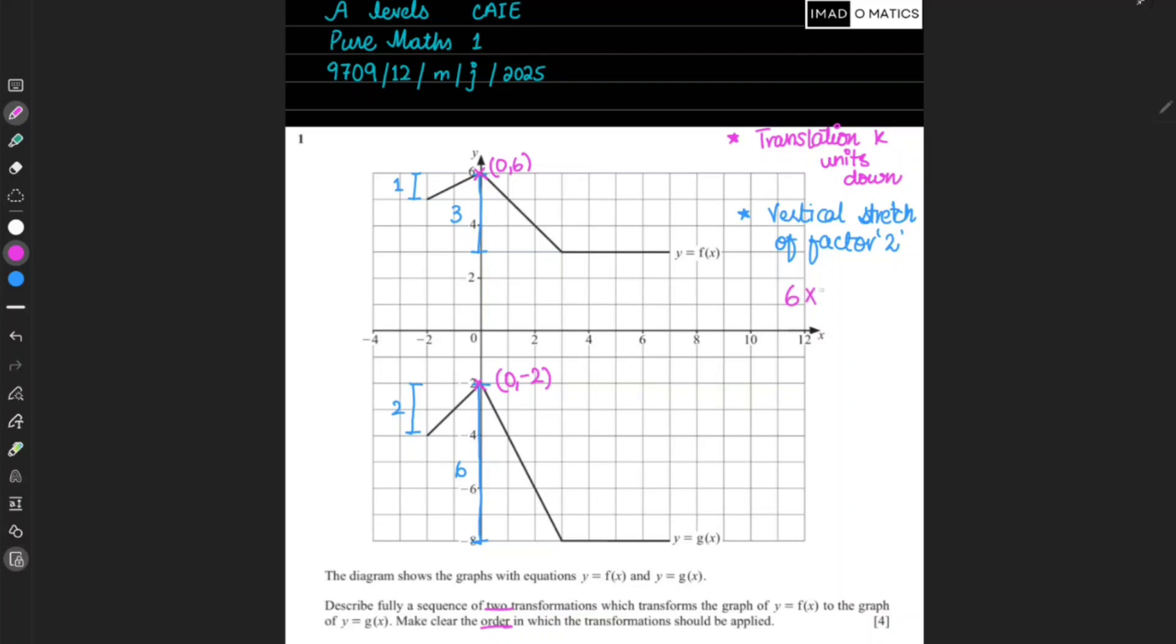I'll show you both ways: first, if it is a vertical stretch first and then translation, or if it is a translation first and then vertical stretch. First analyzing it this way - if the vertical stretch has happened first, then this zero comma six multiplied by two will make the coordinate zero comma twelve. And then if the translation has happened...